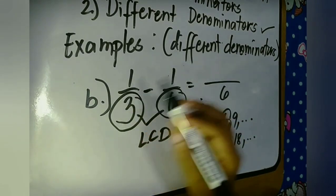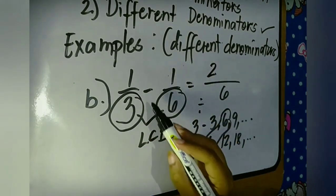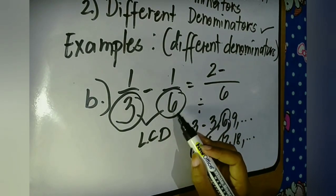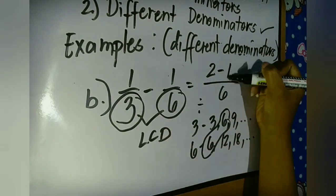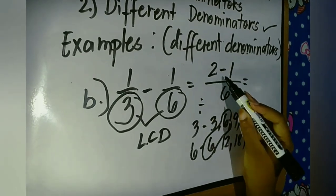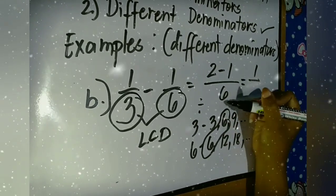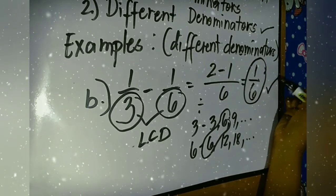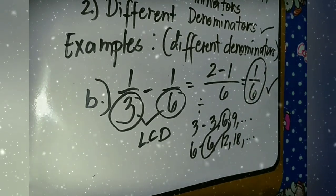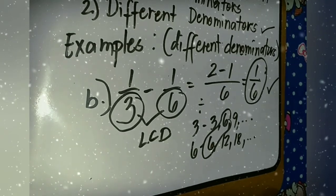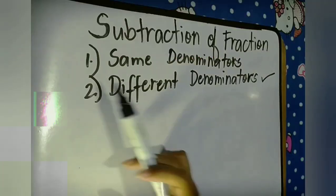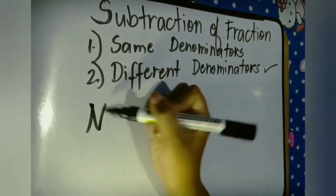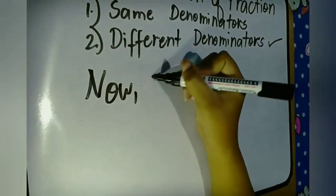Next: six divided by three equals two, times one equals two. Then minus: six divided by six equals one, times one equals one. Two minus one equals one, and the denominator is six. So the answer is one sixth.